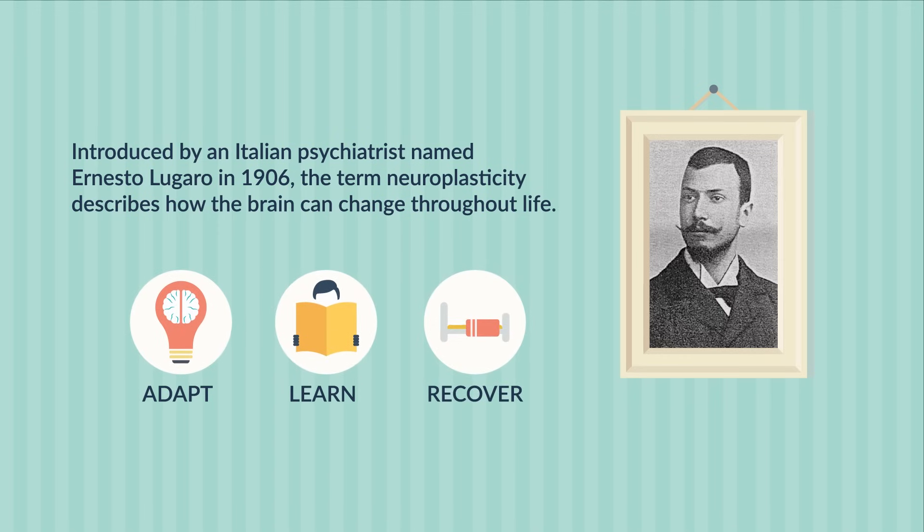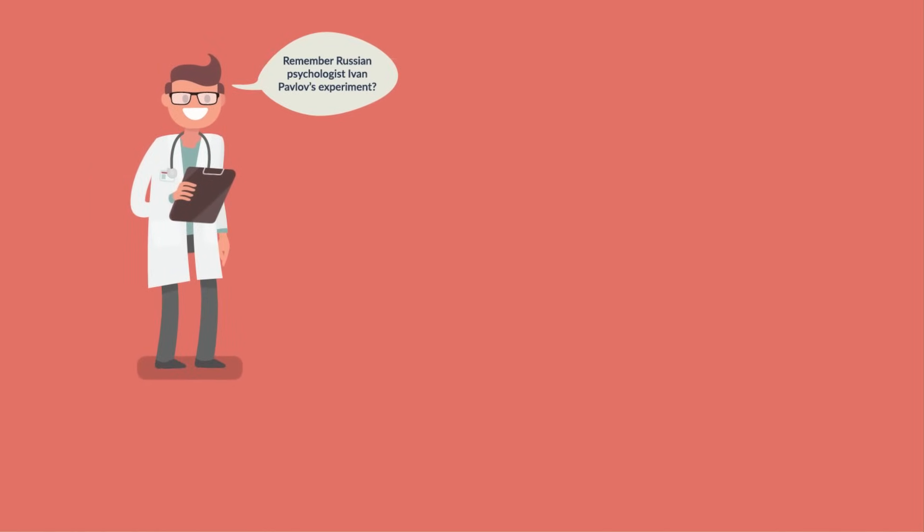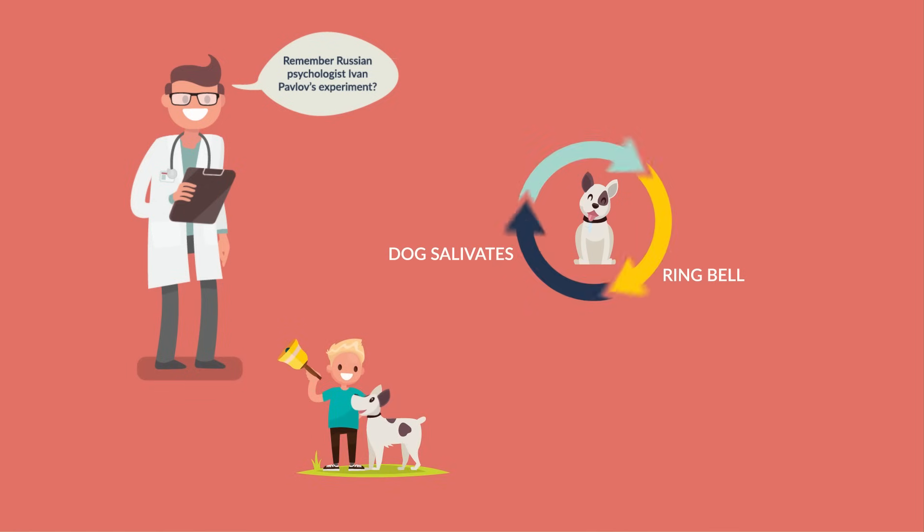But this wasn't the first time that the concept of neuroplasticity was described. You may be familiar with the famous experiment in 1904 conducted by Russian psychologist Ivan Pavlov. Professor Pavlov was able to essentially rewire the brains of his dogs to salivate at the ringing of a bell. He did this by repetitively ringing a bell every single time their food was presented to them.